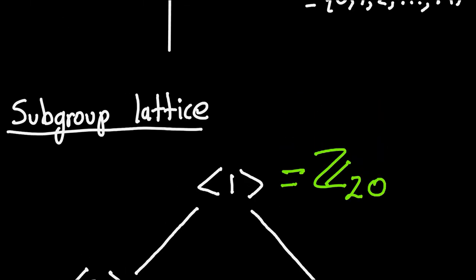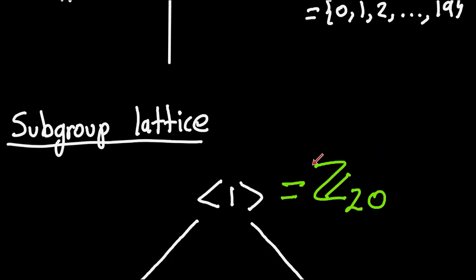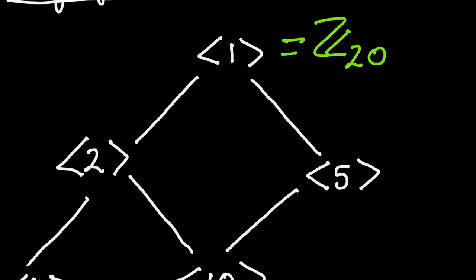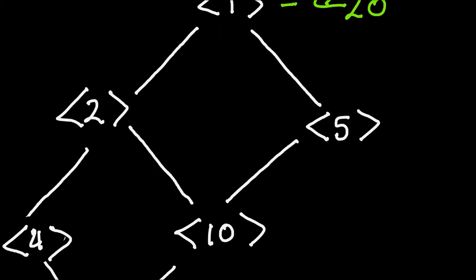The key idea is that whenever you apply this theorem, first you need to make sure the group is cyclic, because it doesn't work for non-cyclic groups. Then look at the divisors of the order of the cyclic group — that gives you all the subgroups. If you have a group that is not cyclic, finding all the subgroups is a little bit more complicated.